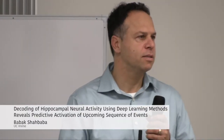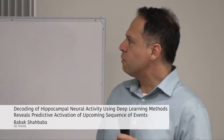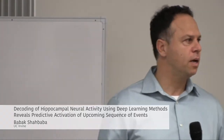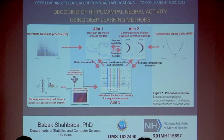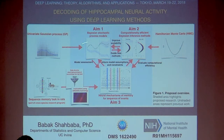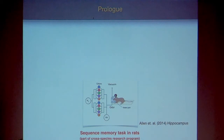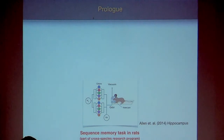Thank you for inviting me to this workshop. My talk will focus on the application side, more specifically in neuroscience. Along the way I'll discuss statistical modeling as aim 1 and developing computationally efficient methods as aim 2. The application we are interested in is a sequence memory task in rats, where our collaborator designed an experiment to understand the underlying neural mechanisms of memory for sequences of events.